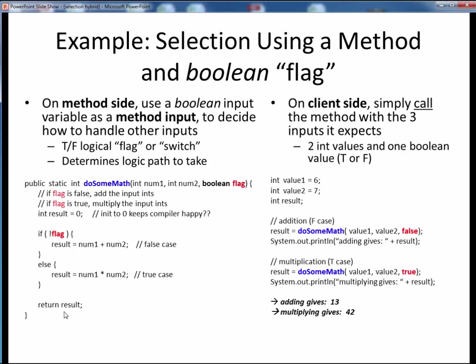This may be a simple example, but it shows how we might use a Boolean value to control a logical flow elsewhere. Okay, so then how would we put this method code to use in some external client code?